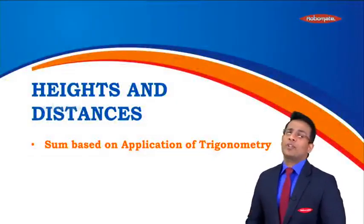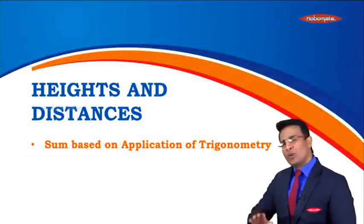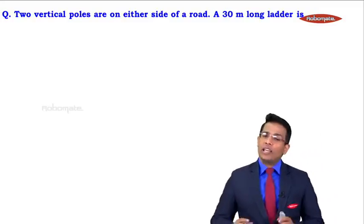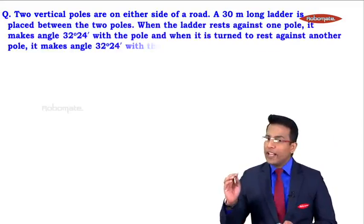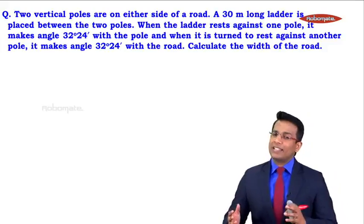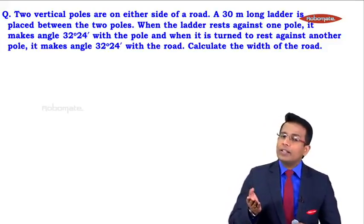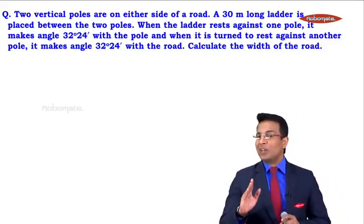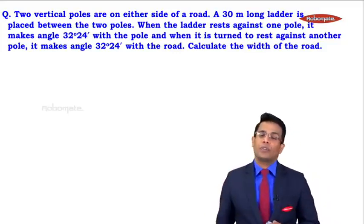In this module from the chapter Heights and Distances, let's do a sum based on application of trigonometry. Two vertical poles are on either side of a road. A 30-meter long ladder is placed between the two poles. When the ladder rests against one pole it makes an angle of 32 degrees 24 minutes with the pole, and when turned to rest against the other pole it makes 32 degrees 24 minutes with the road. Calculate the width of the road.